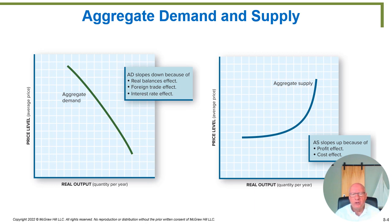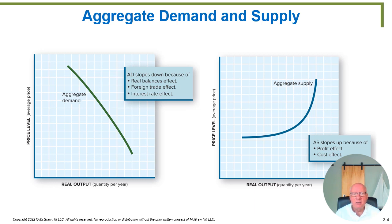Let's highlight a couple of reasons for the aggregate demand curve's downward slope. The real balance effect says that whatever balance you have in your checking and savings account, if prices on average are falling, since you still have the same amount of money, you are now a wealthier person because the same amount of money now buys more. So if prices fall, the desire to buy more goes up — that's what the downward sloping curve says.